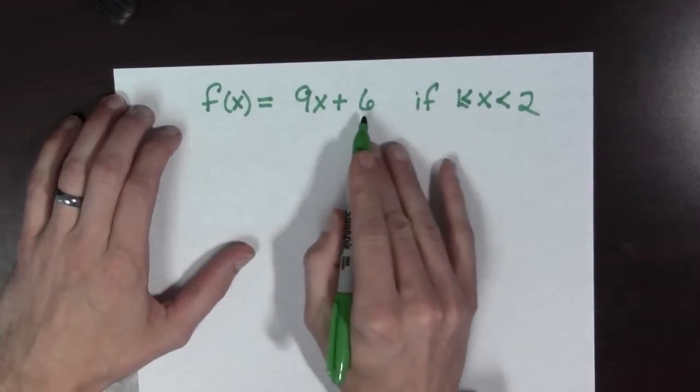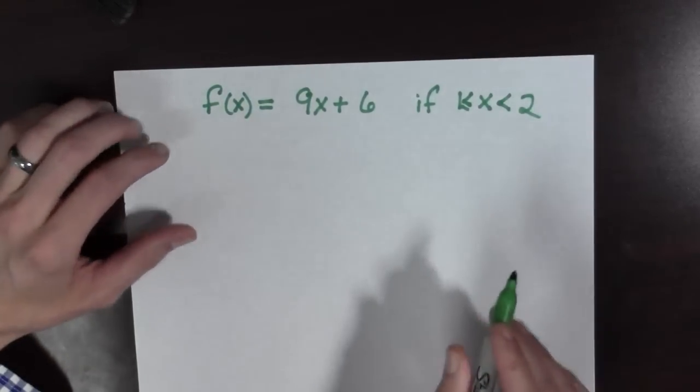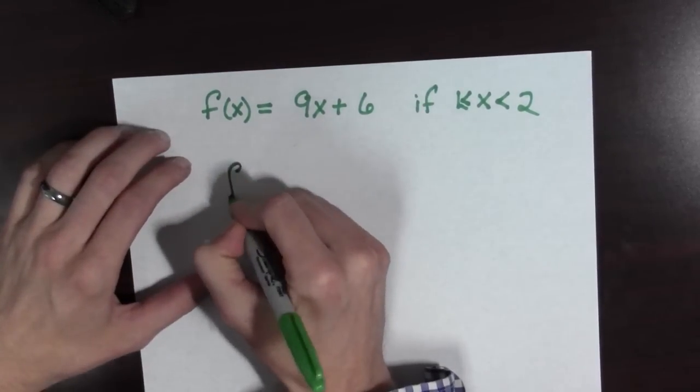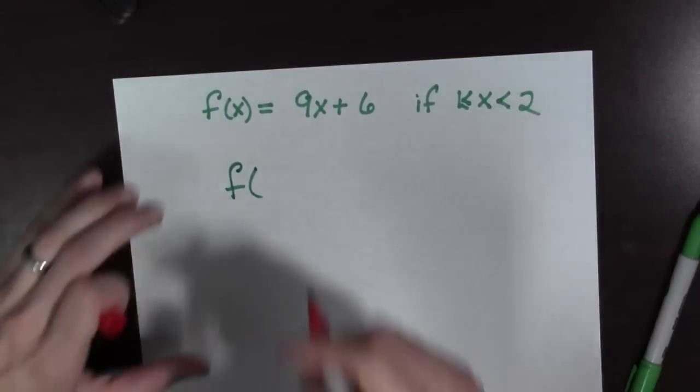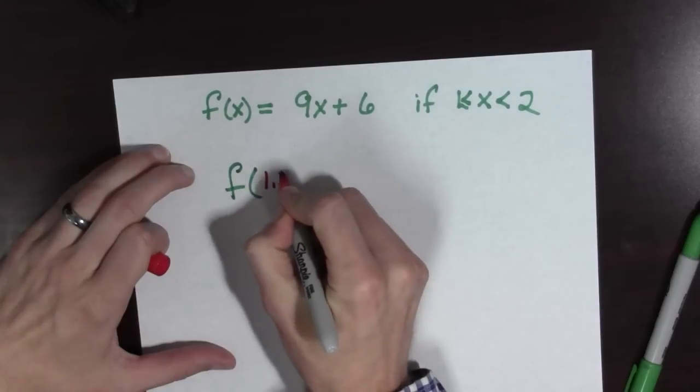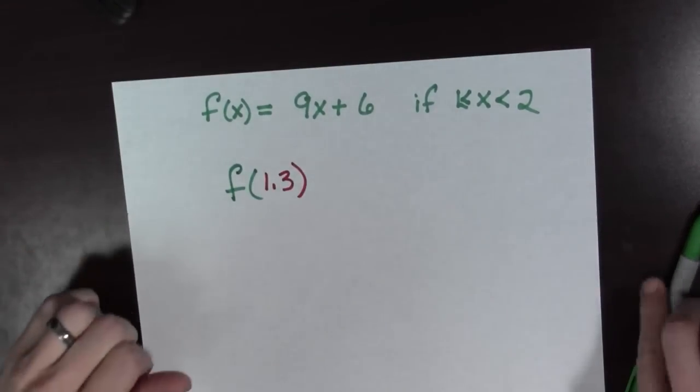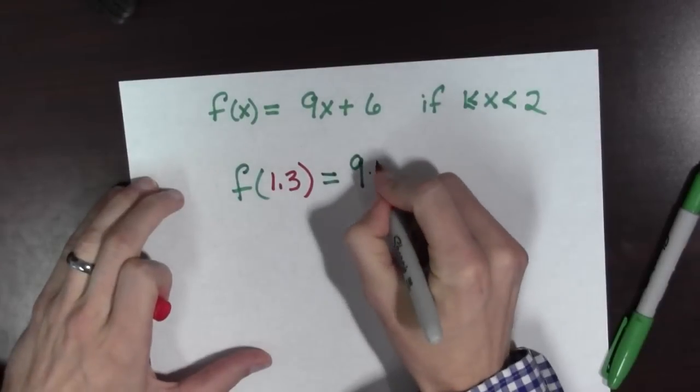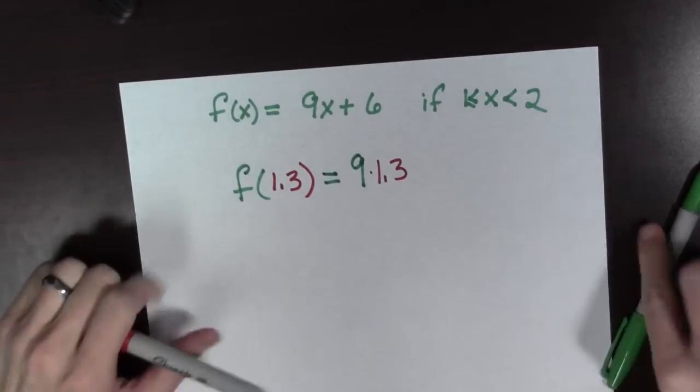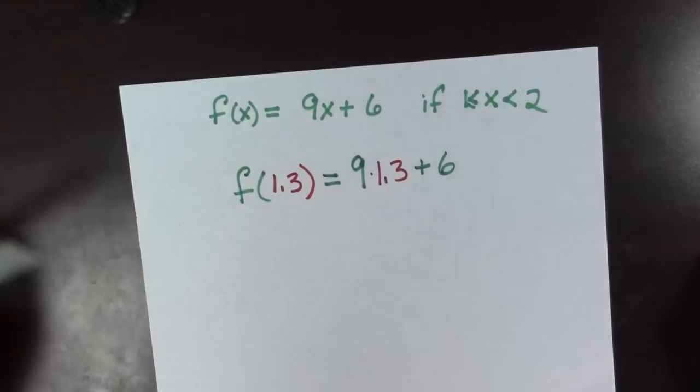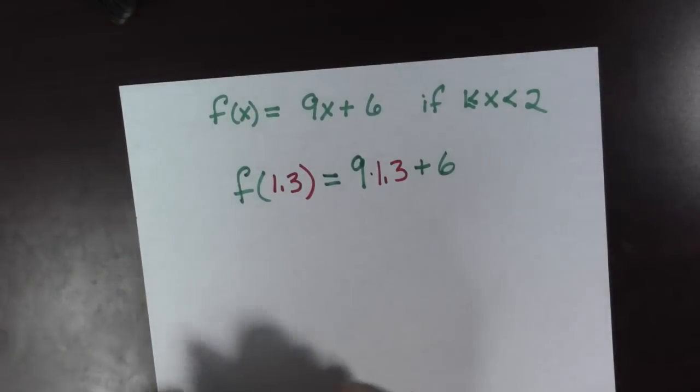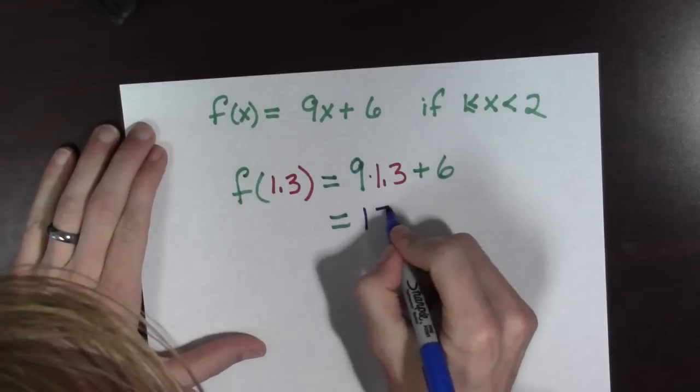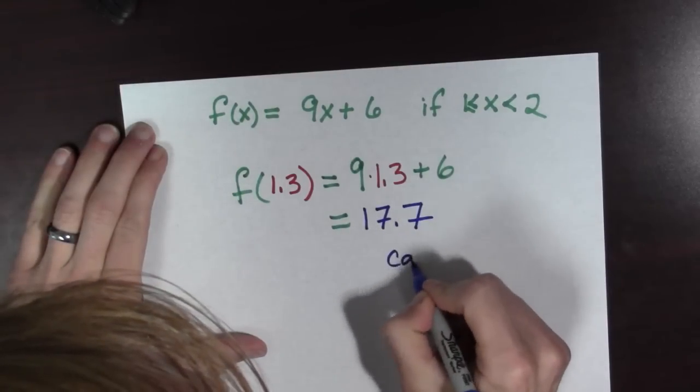And we see that f of x is equal to 9x plus 6 if 1 is less than or equal to x less than 2. And so, we're going to have f of how old is she? She's 1.3 human years old. So, that's going to equal 9 times 1.3 plus 6. And doing the arithmetic, we see that this is equal to 17.7 cat years.